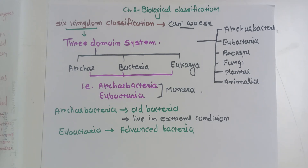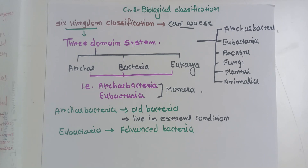This is the six-kingdom classification given by Carl Woese. The classification history started with the basic initial classification given by Linnaeus, which had many drawbacks but was based on morphological characters. Today we follow Whittaker's five-kingdom classification as it is very advanced. In this chapter on biological classification, we will also study virus, viroids, and lichens, which are not included in any of these kingdoms. Thank you.